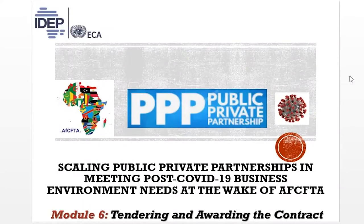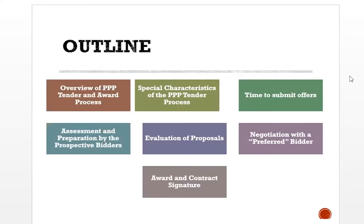Module 6: Tendering and Awarding the Contracts. Outline: Overview of PPP tender and award process. Special characteristics of the PPP tender process. Time to submit offers. Assessment and preparation by the prospective bidders. Evaluation of proposals. Negotiation with a preferred bidder. Award and contract signature.